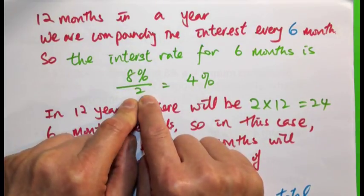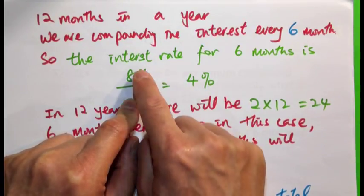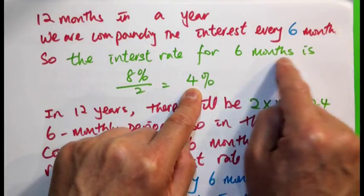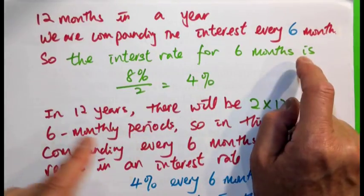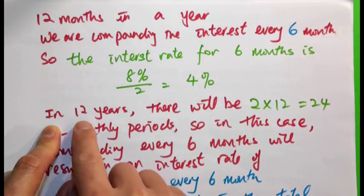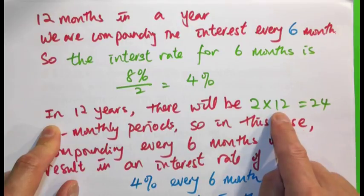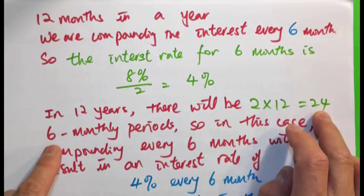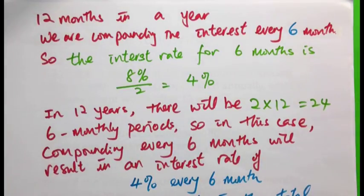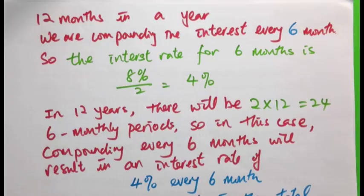So it's 8% divided by 2, which yields 4%. This is 4% interest for every 6 months. Because we are looking at 6-monthly periods, in 12 years there will be 2 times 12, which is 24 six-monthly periods. Compounding every 6 months results in an interest rate of 4% every 6 months, and there will be 24 periods in the total investment period of 12 years.